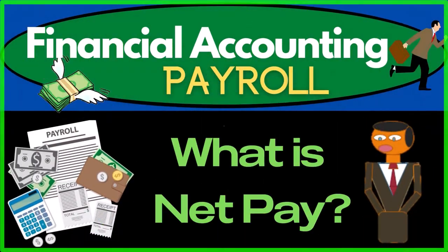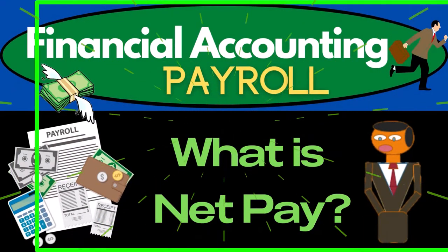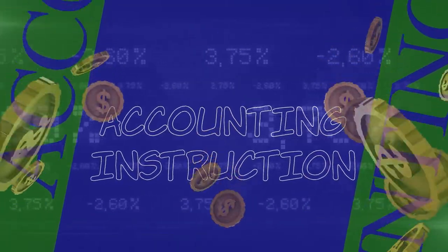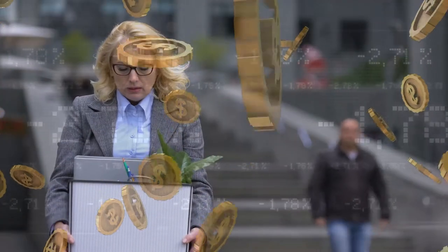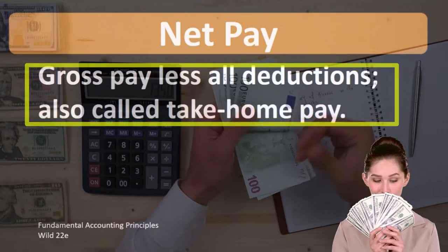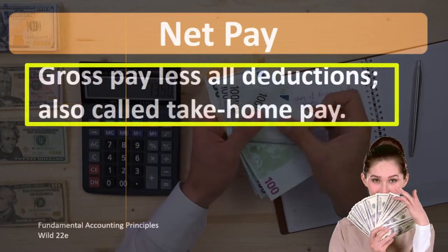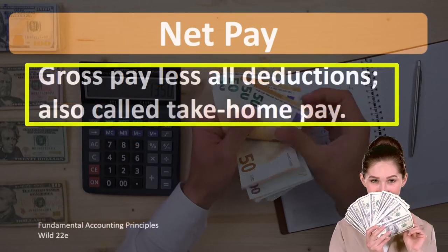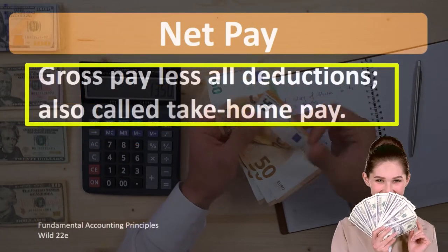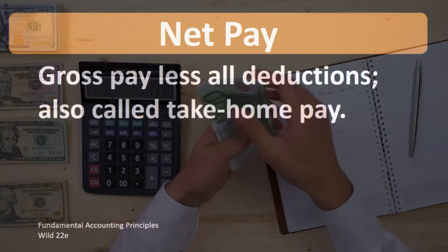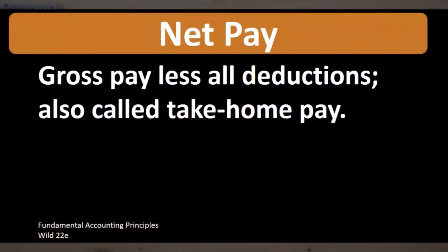Hello, in this lecture we will define net pay. According to Fundamental Accounting Principles, Wild 22nd Edition, the definition of net pay is gross pay less all deductions, also called take-home pay. When we're thinking about net pay, we're thinking about the paycheck that an employee will receive, net of those deductions, those deductions including withholdings.